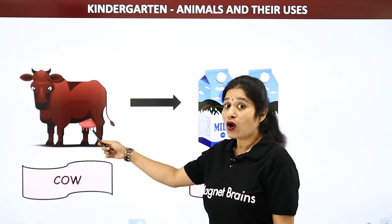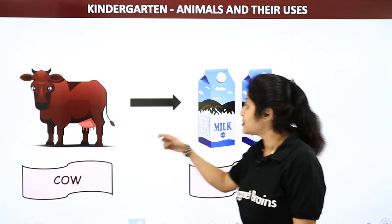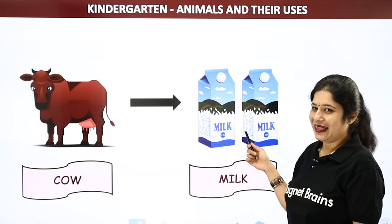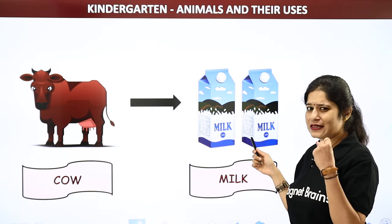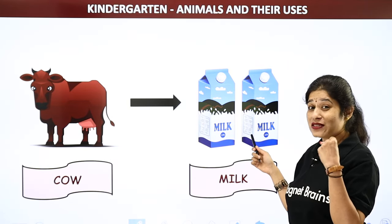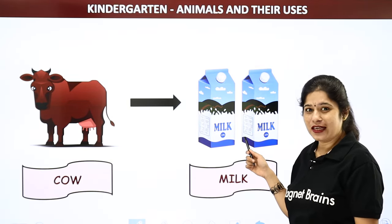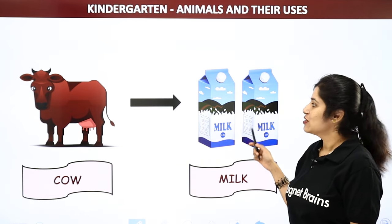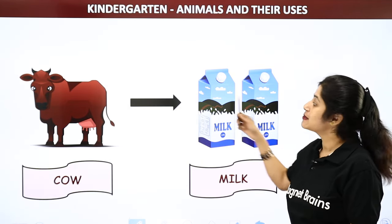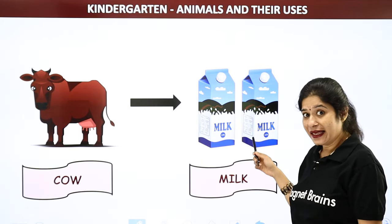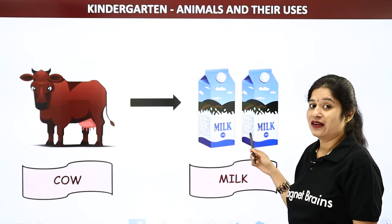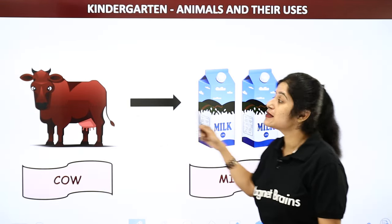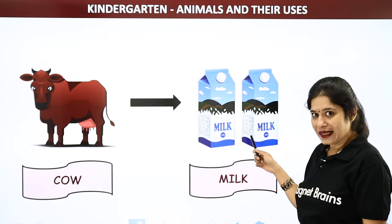The next animal is cow. Cow gives us milk. Drinking milk makes us very much healthy. It is good for us. So cow gives us milk. Repeat with me — cow gives us milk.